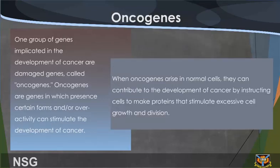Oncogenes. One group of genes implicated in the development of cancer are damaged genes called oncogenes. Oncogenes are genes in which certain forms and/or overactivity can stimulate the development of cancer. When oncogenes arise in normal cells, they can contribute to the development of cancer by instructing cells to make proteins that stimulate excessive cell growth and division.